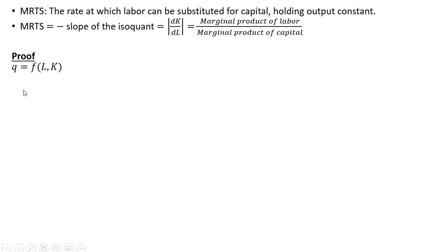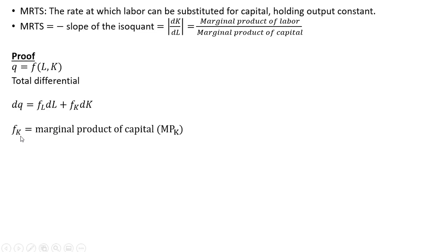Here is a production function. The quantity of output is a function of units of labor and units of capital, and we're going to use the technique of the total differential. F subscript k is the partial derivative of the production function with respect to capital, or the marginal product of capital. F subscript l is the partial derivative of the production function with respect to labor, and it is the marginal product of labor.